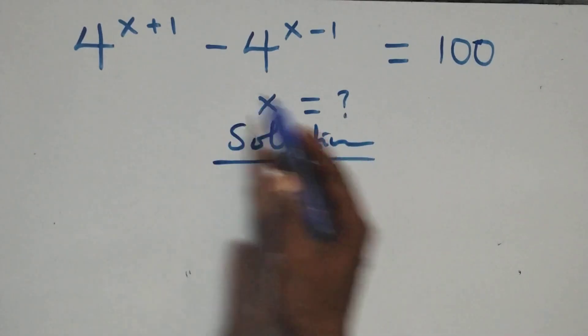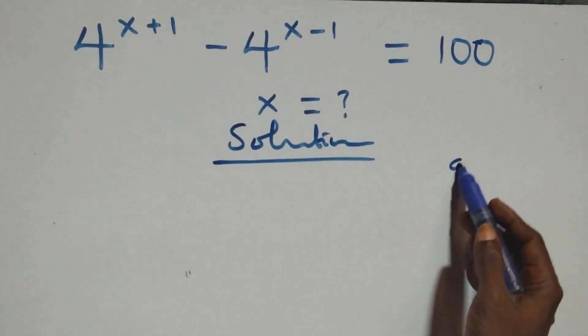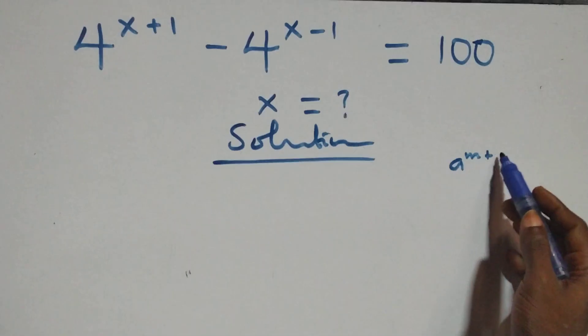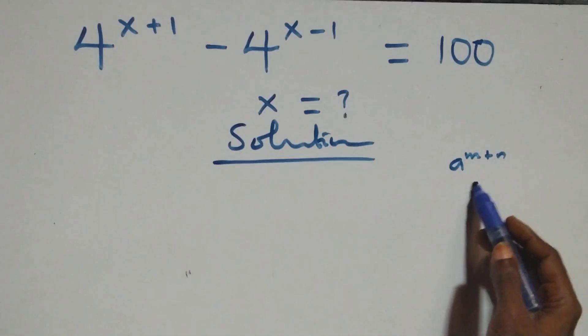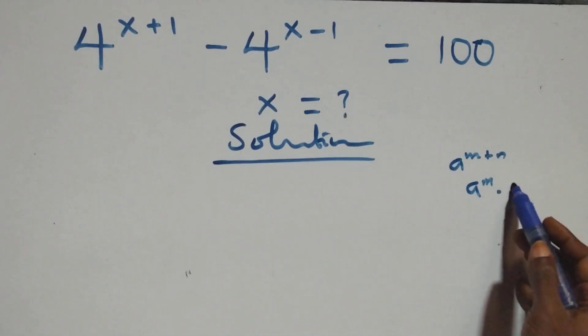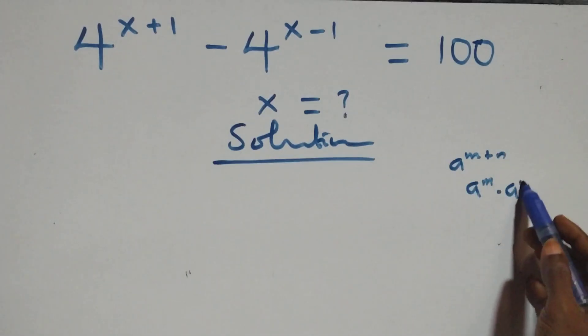And what we have here: this follows the law that a raised to power n plus n is the same thing as a raised to power n times a raised to power n.